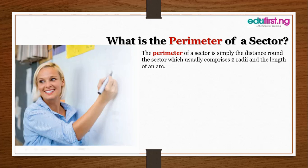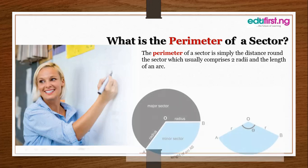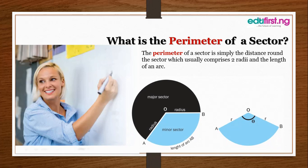comprises two radii and the length of an arc — it's that simple. In other words, you have a major sector and a minor sector which together form a circle. You have two radii, a center O, and the length of an arc. We're going to be placing emphasis on the minor sector, which is the blue shaded region.